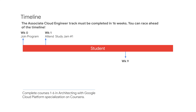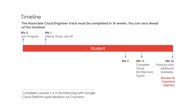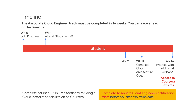The Associate Cloud Engineer track must be completed in 16 weeks. This slide shows a suggested timeline. Complete the Architecting with Google Cloud Platform specialization within the first nine weeks. Complete the Cloud Architecture Quest and other hands-on labs by week 16. Your access to Coursera will expire at the end of 16 weeks. Practice for the certification exam and complete the exam before the voucher expiration date. Remember, you can race ahead of the suggested timeline.